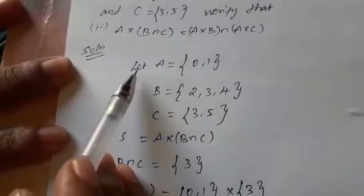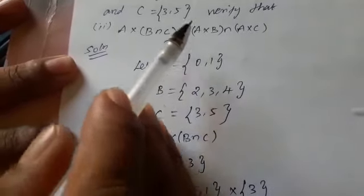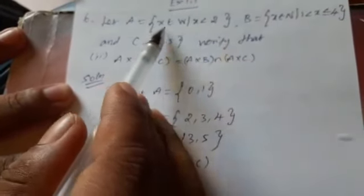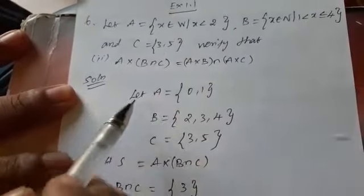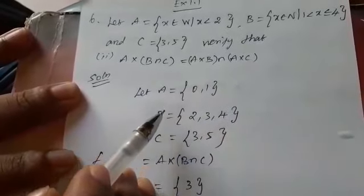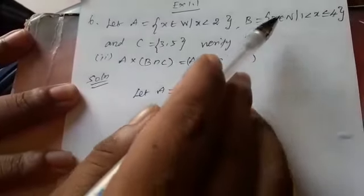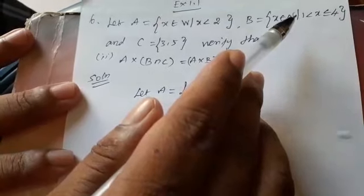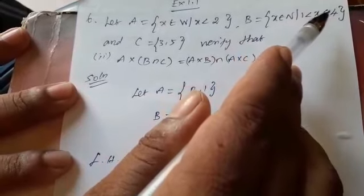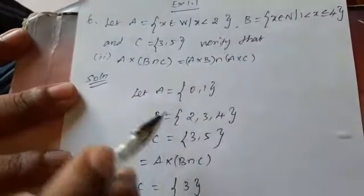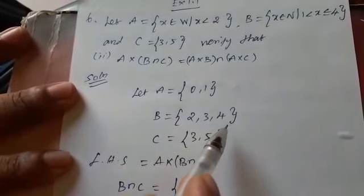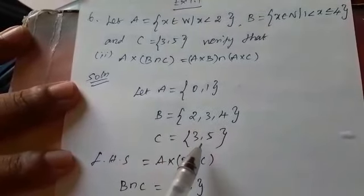Solution. Let A = {x : x < 2}, where x belongs to whole numbers. So A = {0, 1}. Next, B = {x : x belongs to N}, N is natural numbers, and 1 < x ≤ 4. So B = {2, 3, 4}. And C = {3, 5}.